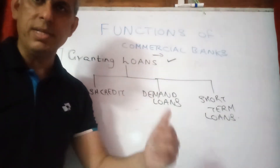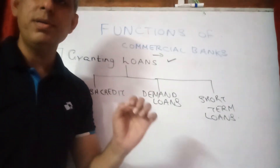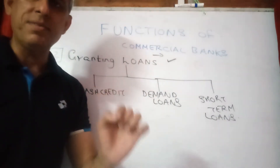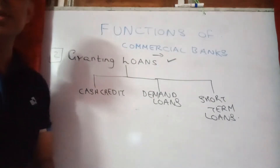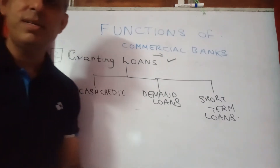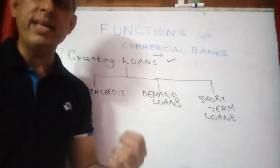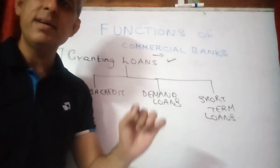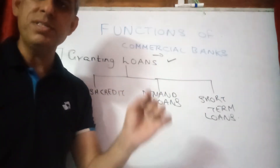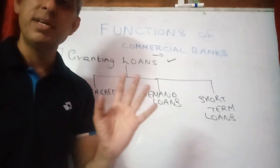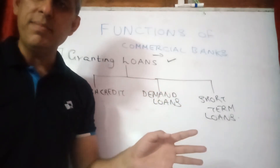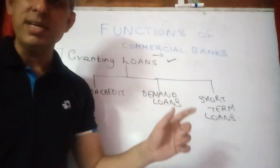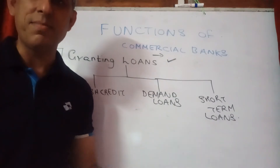We are back with another video on commercial bank's functions. Remember, we have studied its first primary function in the previous one, wherein they take money through various deposits and therefore have to pay the saver's interest on such deposits — saving deposit, current deposit, both demand, and the last one being fixed deposit, referred generally as a term deposit.